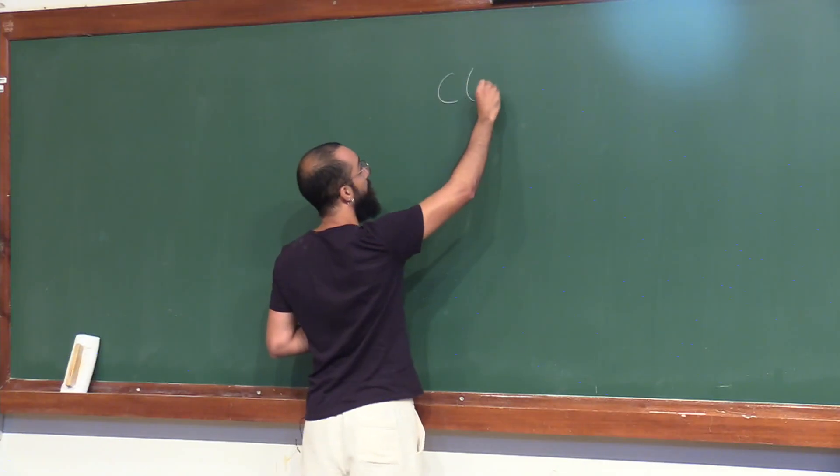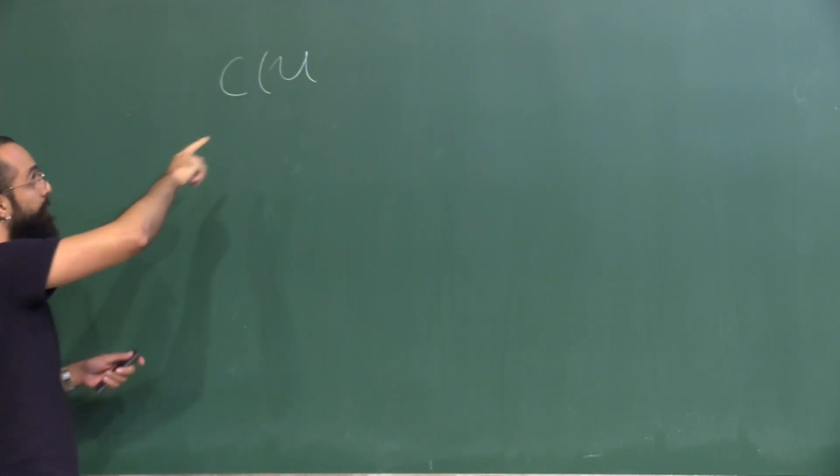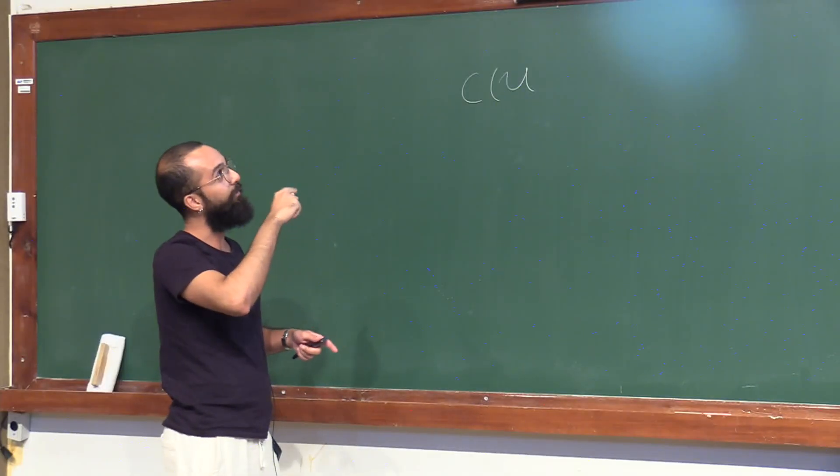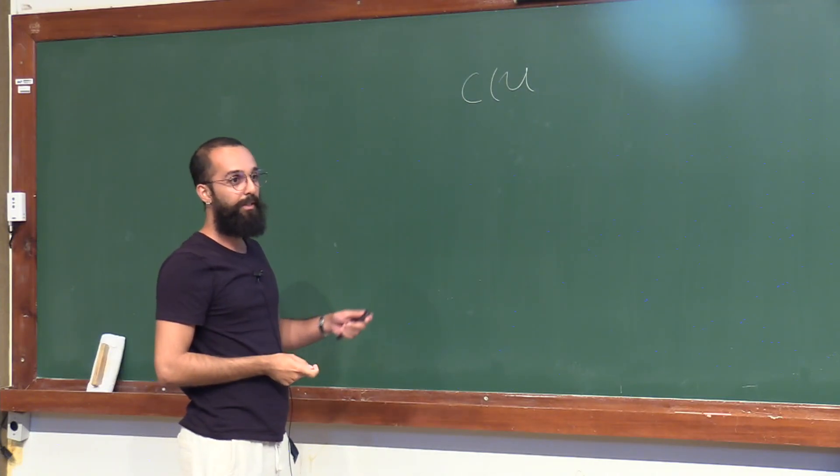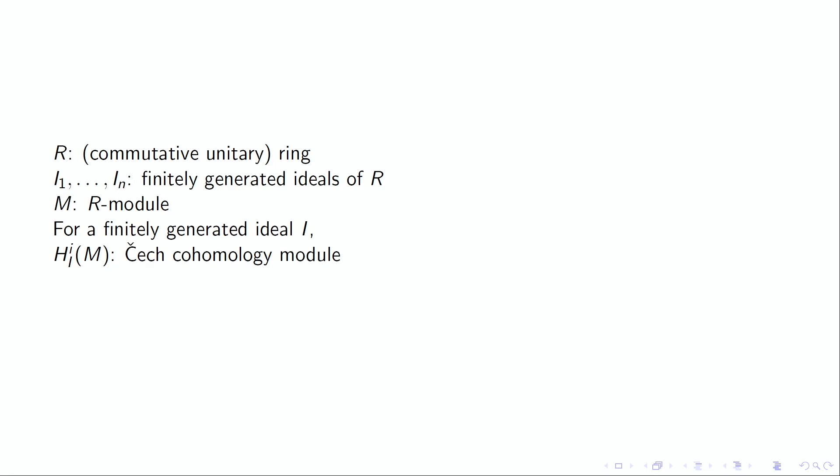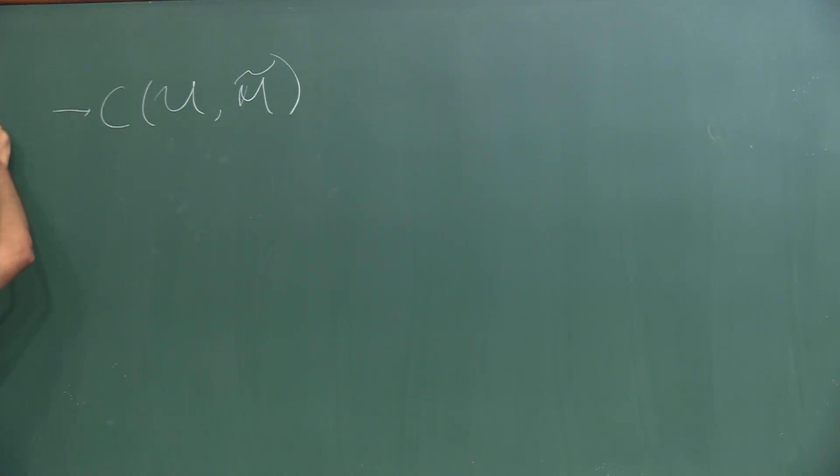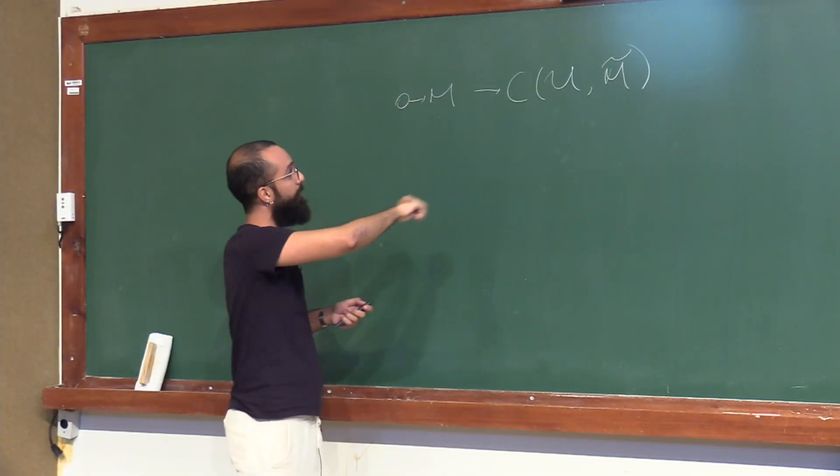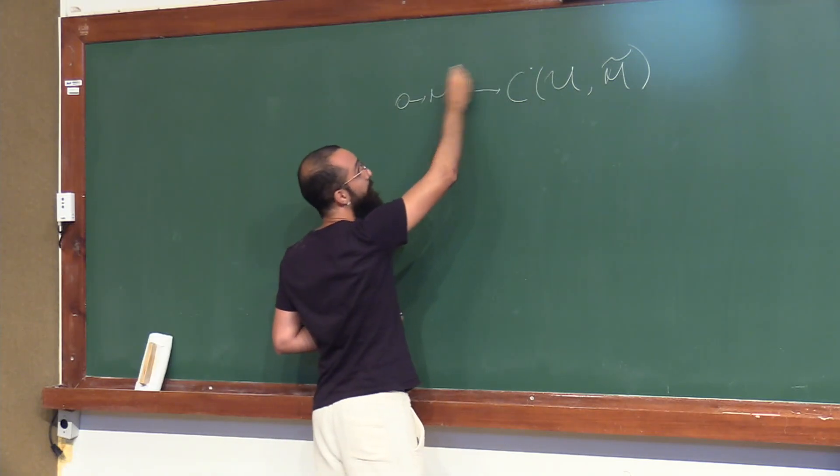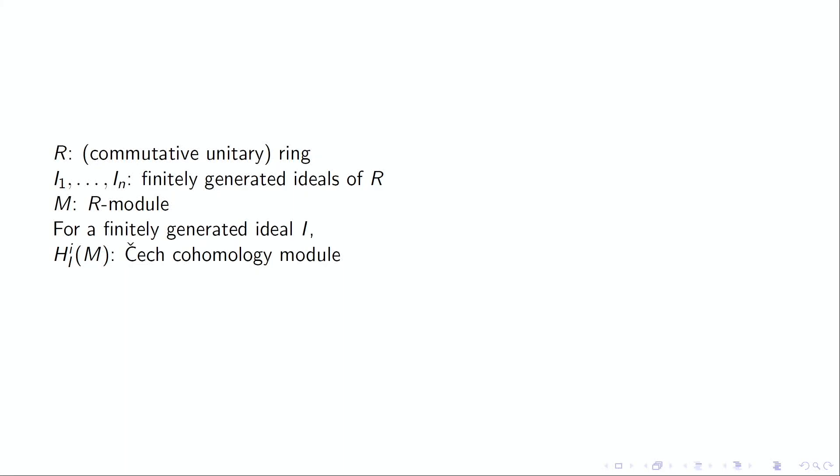We take the Čech complex of the open covering defined by the basic open sets of a finite generator set of the ideal I, with coefficients in the sheafification of the module M. We also include the module M in the sequence. The cohomology of this complex we denote by cohomology of M supported in I.